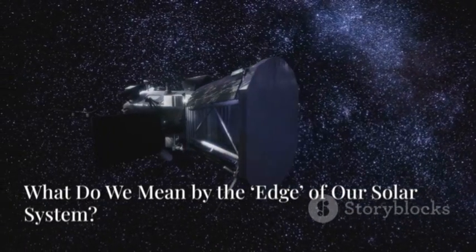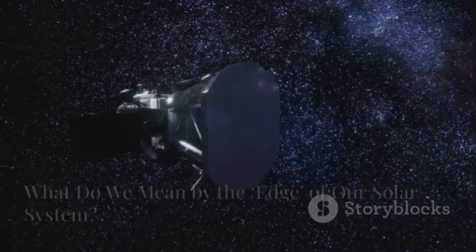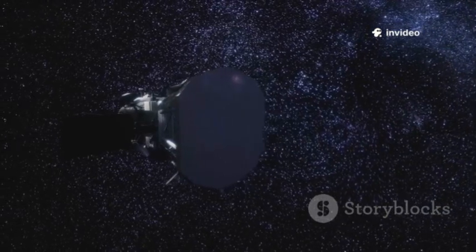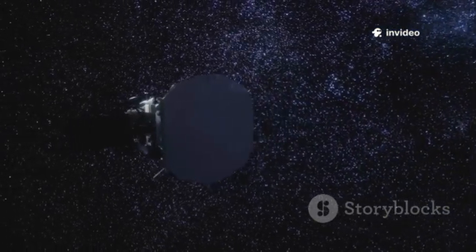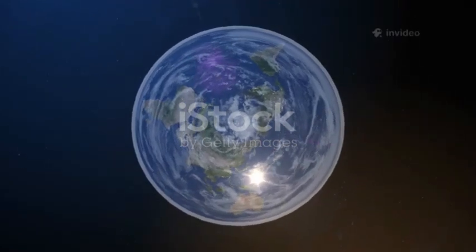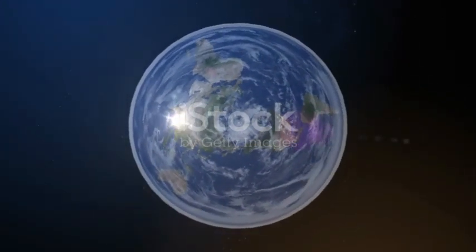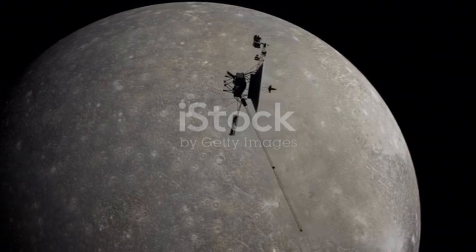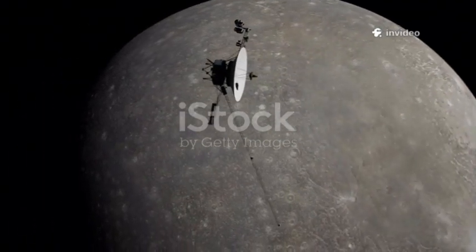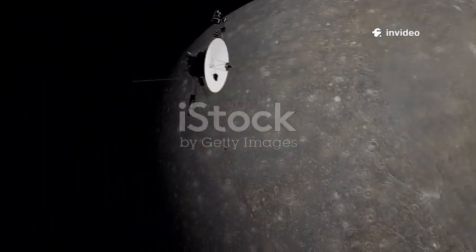The true edge of our solar system isn't Neptune or the Kuiper belt, it's much farther, defined by the sun's invisible shield, the heliosphere. The sun's solar wind creates this vast bubble, protecting us from harsh cosmic rays in interstellar space. The edge is where this bubble ends, the heliopause, where the sun's influence fades and the galaxy begins.